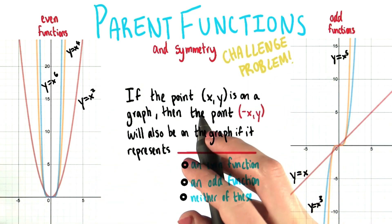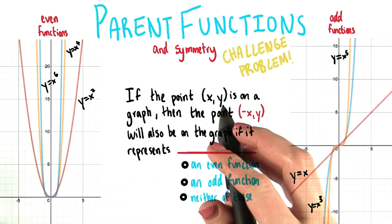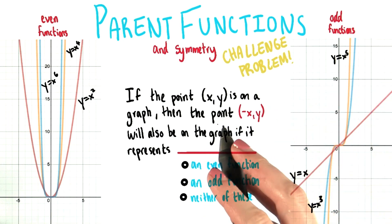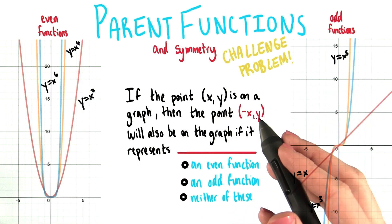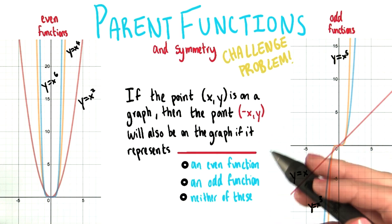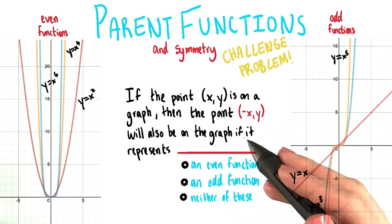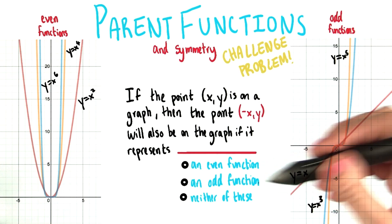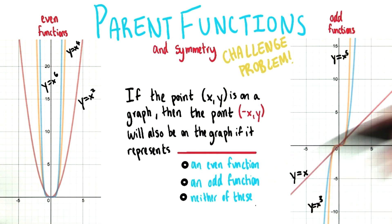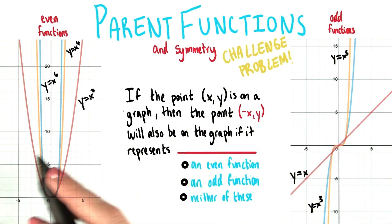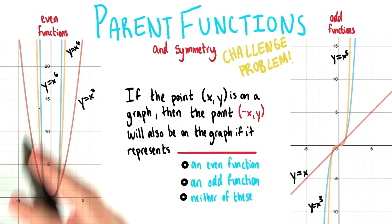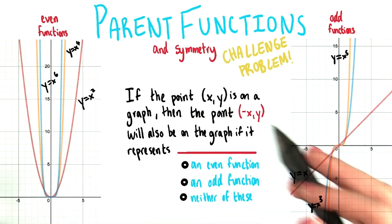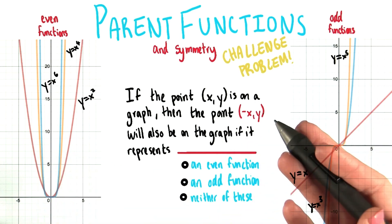So if we know that a point that we're going to call (x, y) is on a given graph, what if we find out that the point (-x, y) is also on that graph? What does that say about this graph? Does that mean that this represents an even function, or an odd function, or neither of these? Think about which of the graphs, either on this plane or this plane, this property applies to. You can even test it out with real points.